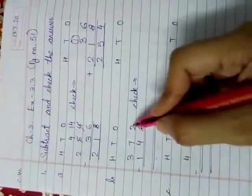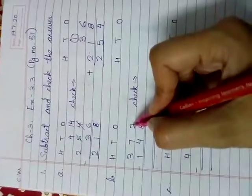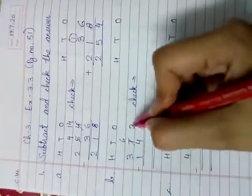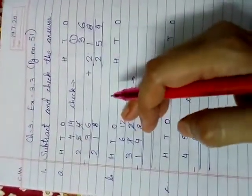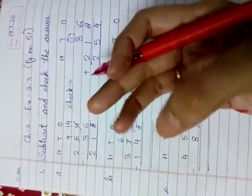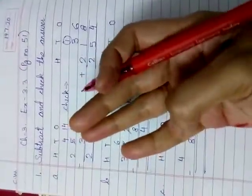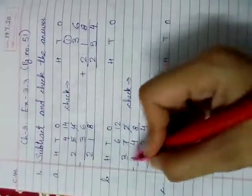Let us do one more question. 2 minus 8, not possible. So, what will this 2 do? Borrowing. 7 will become 6. 2 will become 12. 12 minus 8. After 8, count till 12. 9, 10, 11, 12. That means 4. 6 minus 4, 5, 6. That means 2. 3 minus 1. 2, 3. That means 2.